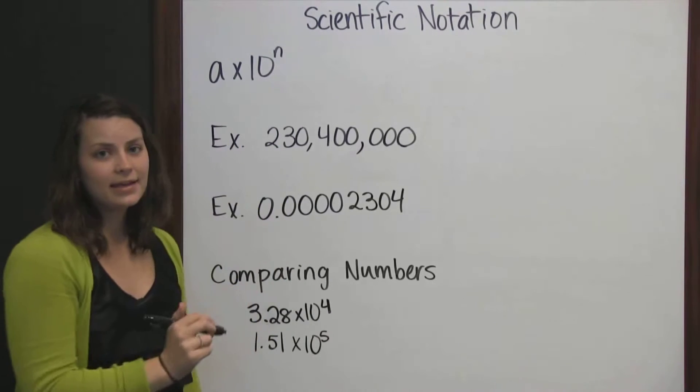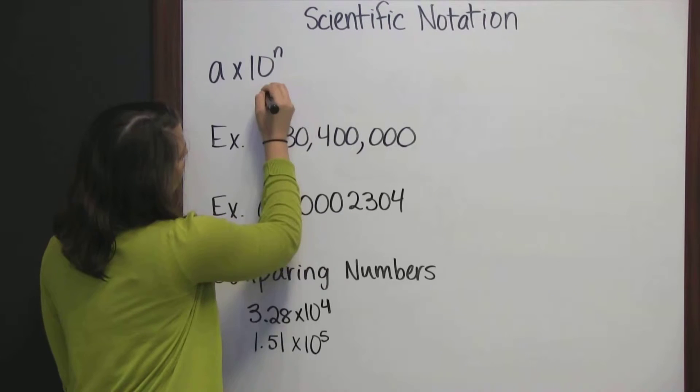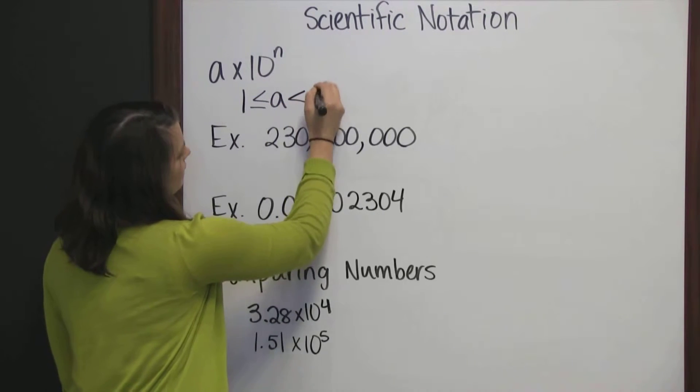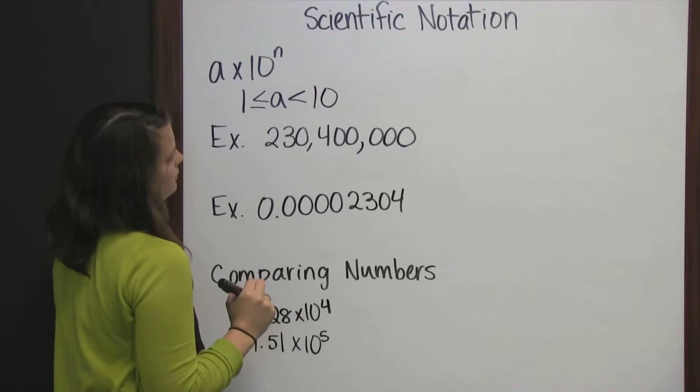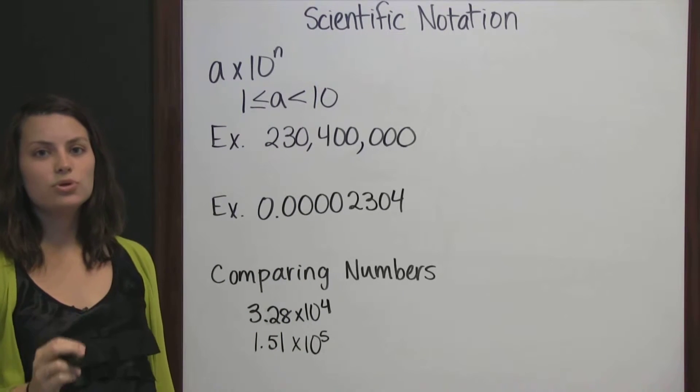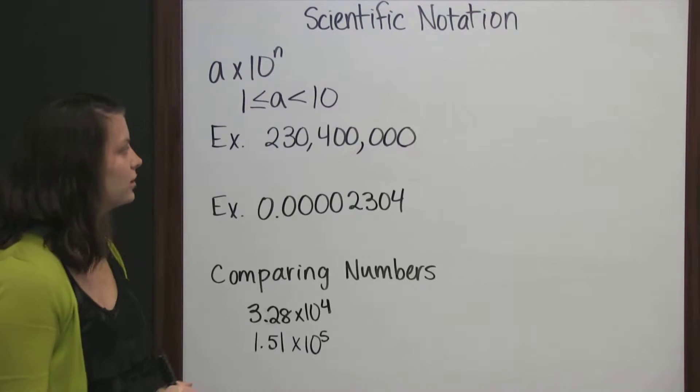Where a is a number that is greater than or equal to 1, but it's less than 10. And n is the number of times we must move the decimal, and in which direction.